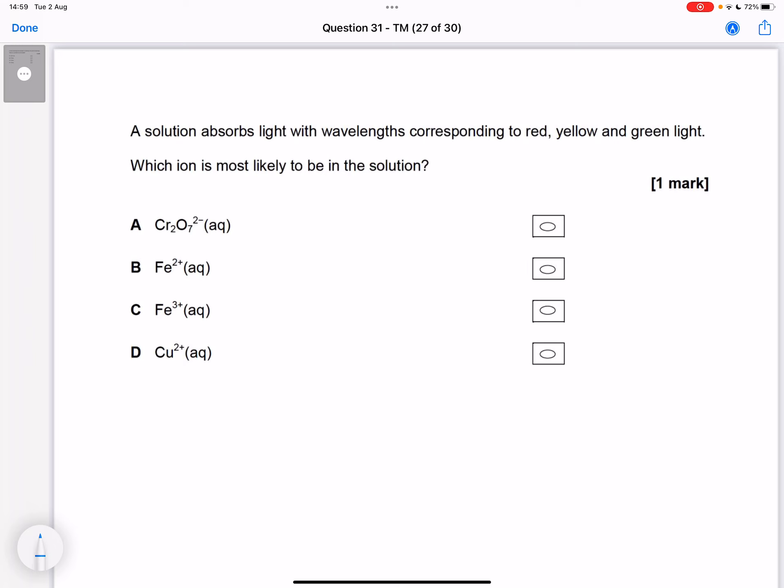So what we can say from this is that our sample will not appear red, yellow, or green, or any combination of red, yellow, and green. So if we mix together red and yellow, for example, we get orange.